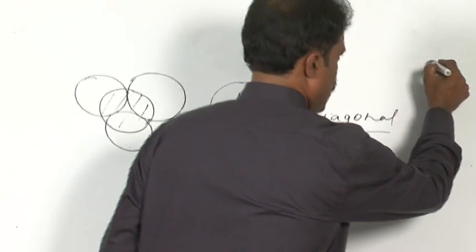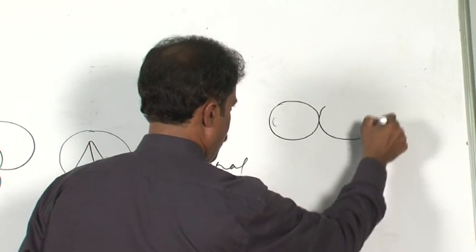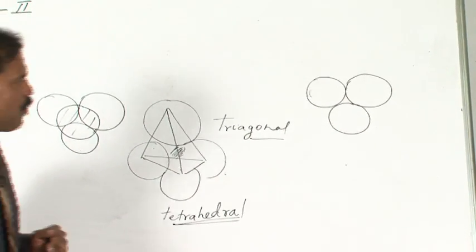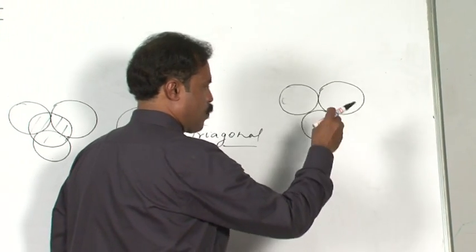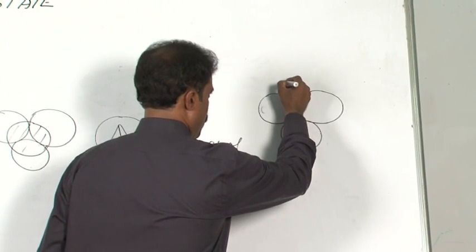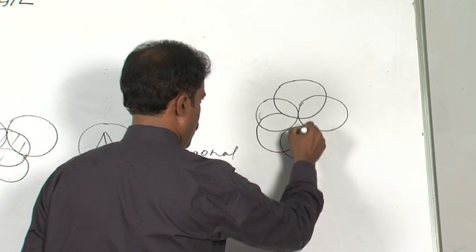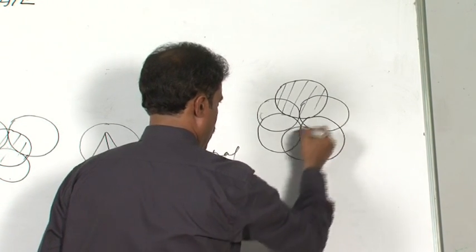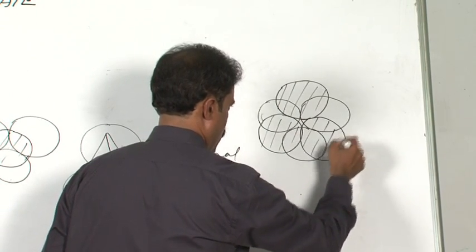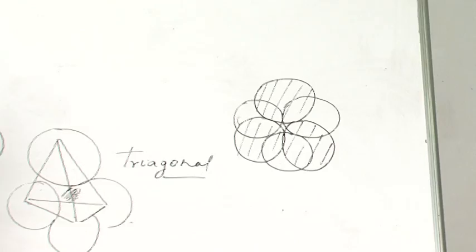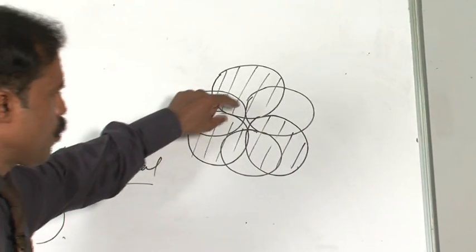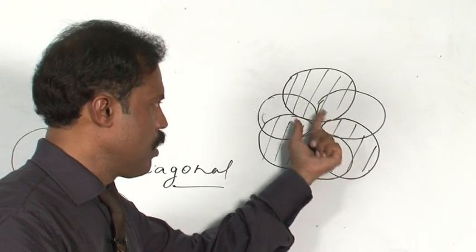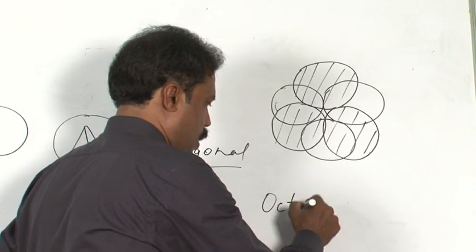There is one more kind of void. Suppose you keep particles in the first layer — a trigonal void is created. Now when you keep spheres in the second layer but they are not placed in that particular void, you shade the spheres in the second layer. The void created by the spheres on the second layer and the first layer is an octahedral void.